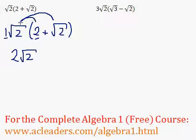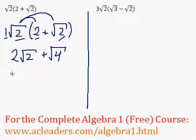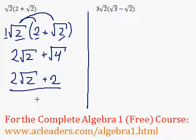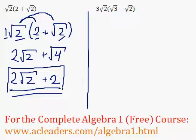And over here, root 2 times root 2. We're multiplying the insides together, and we get 2 times 2, which is 4. So this is 2 root 2. And the root of 4 is just 2. So that's the final answer, 2 root 2 plus 2.